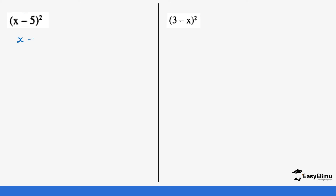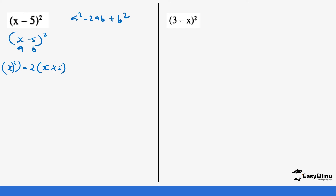So we have (x - 5)². We do not need to expand this the long way; we are just going to use the identity a² - 2ab + b². We identify our a and b: a is going to be x and b is going to be 5. So a² is x², minus 2ab is 2 times x times 5, which is 10x, plus b² which is 5².